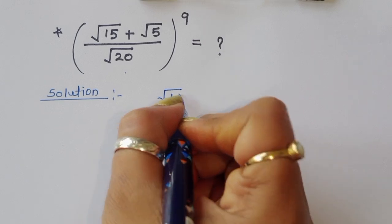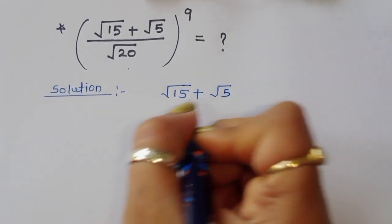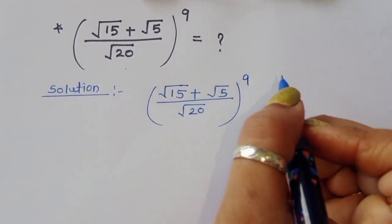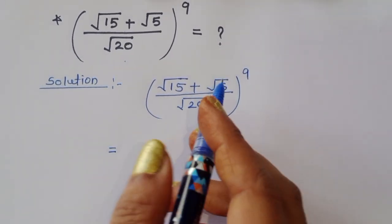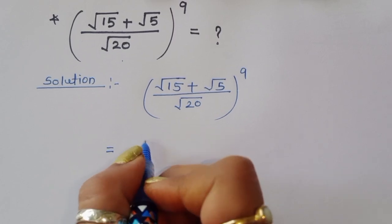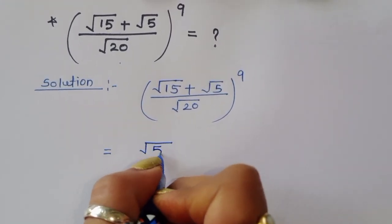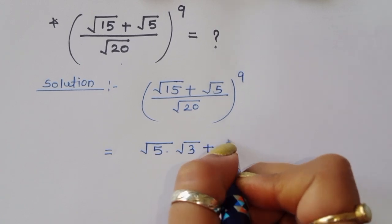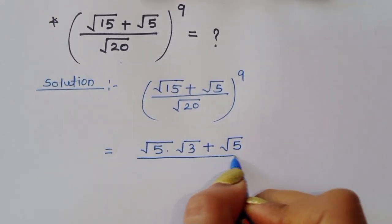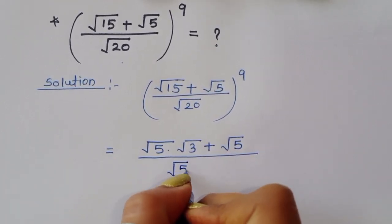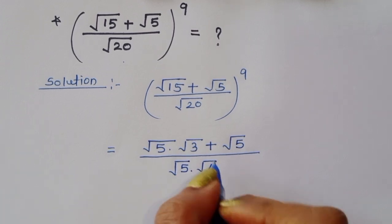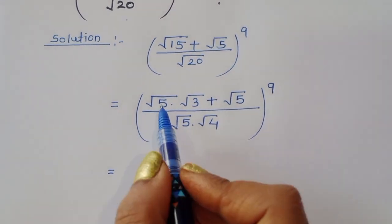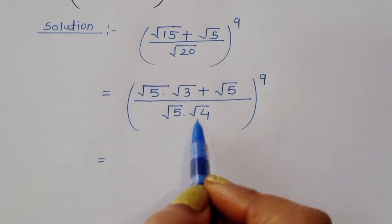We write square root of 15 plus square root of 5, divided by square root of 20, to the power 9. We can write square root of 15 as square root of 5 times square root of 3. And square root of 20 as square root of 5 times square root of 4. Now you can see square root of 5 appears in all terms, so we can take square root of 5 as a common factor.